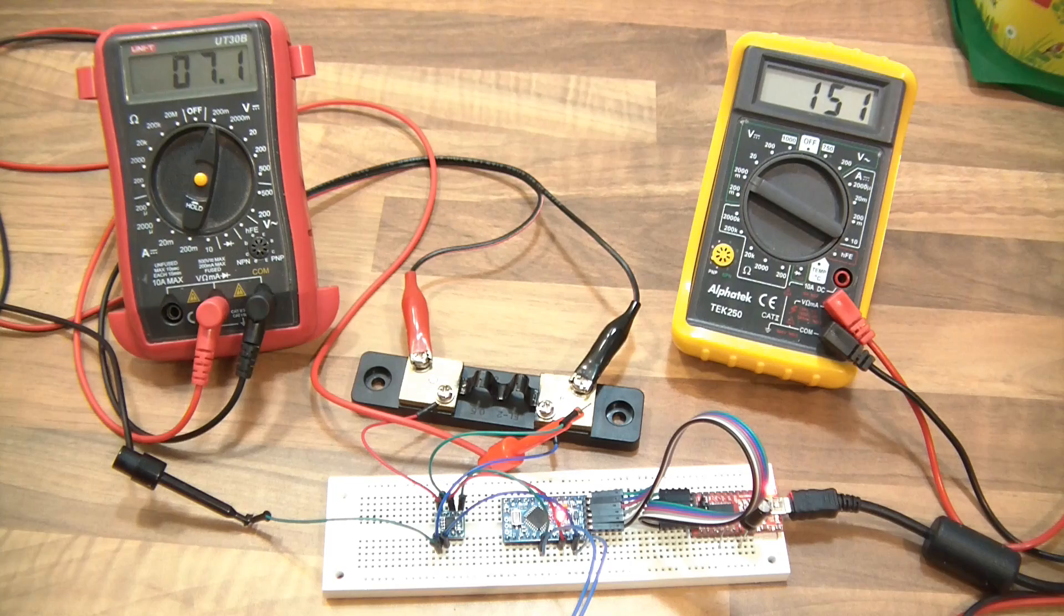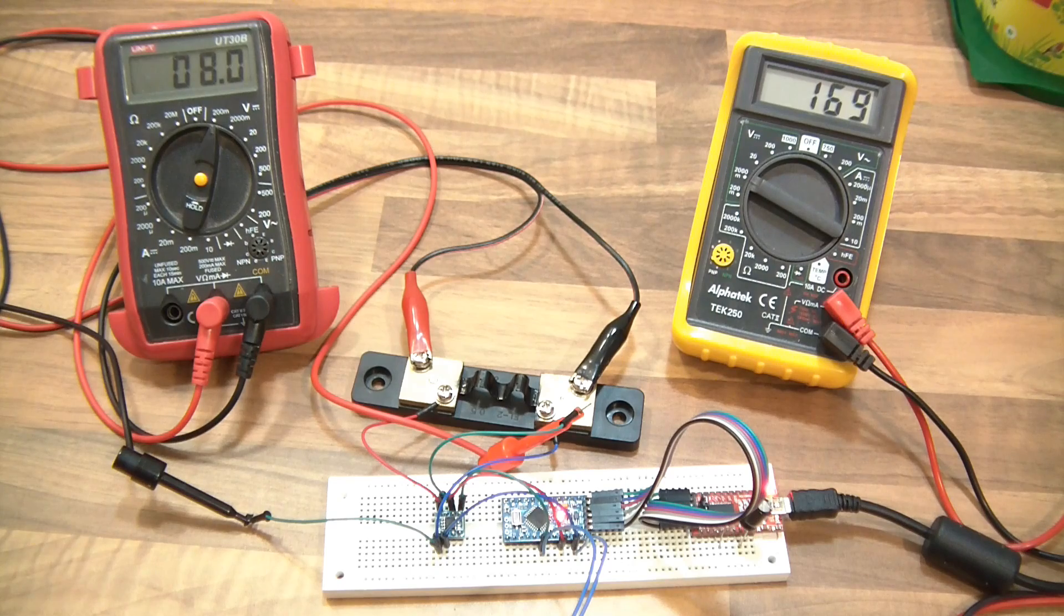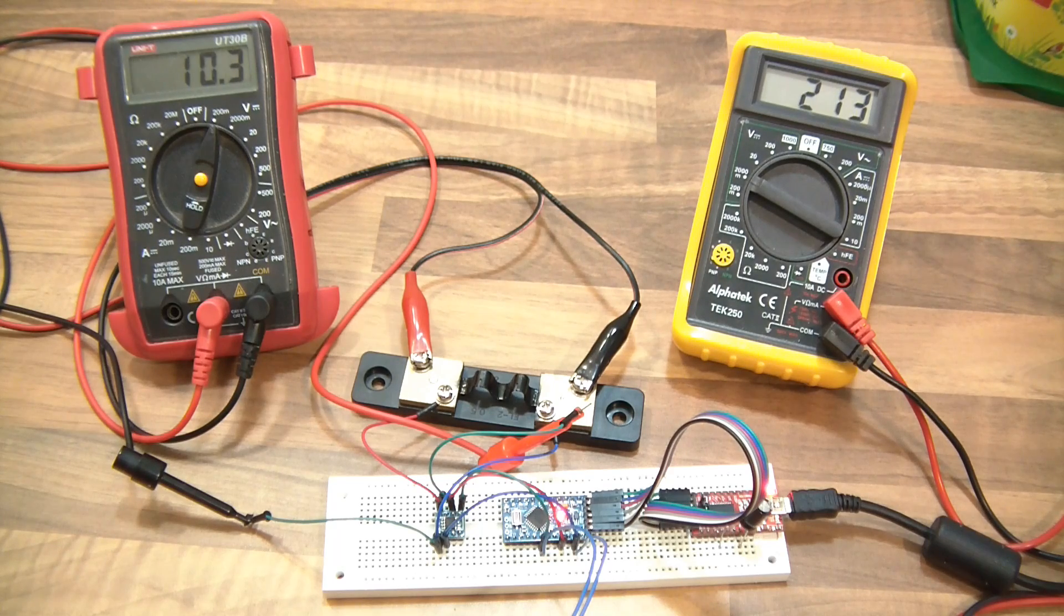7 should be reading about 140, and it's reading 150. Okay. It's a little bit off, actually. But, you know, we'll see. So, 8, that should be about 162, something like that. 9 should be about 180. 10 millivolts should be about 200. Let's go a bit more.